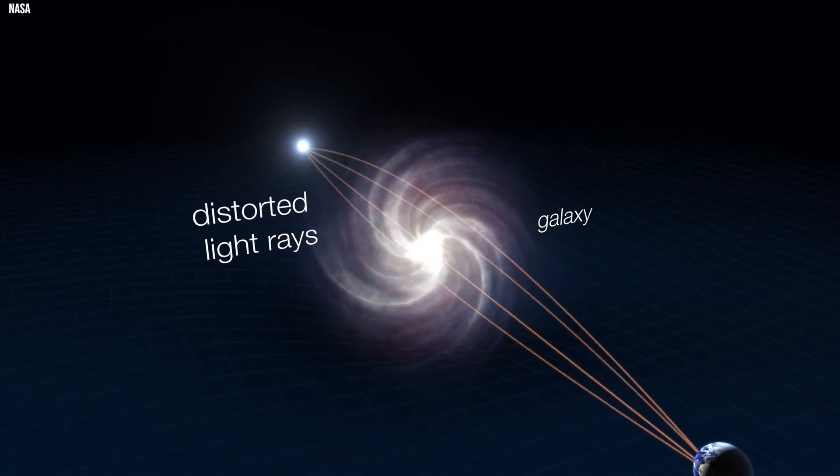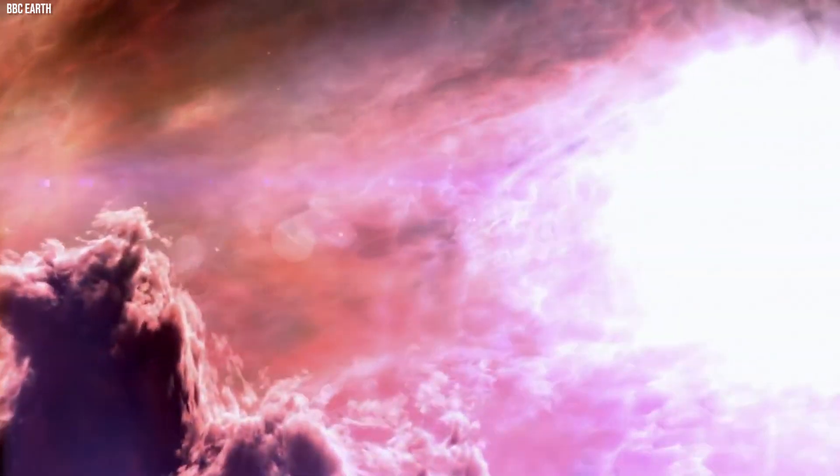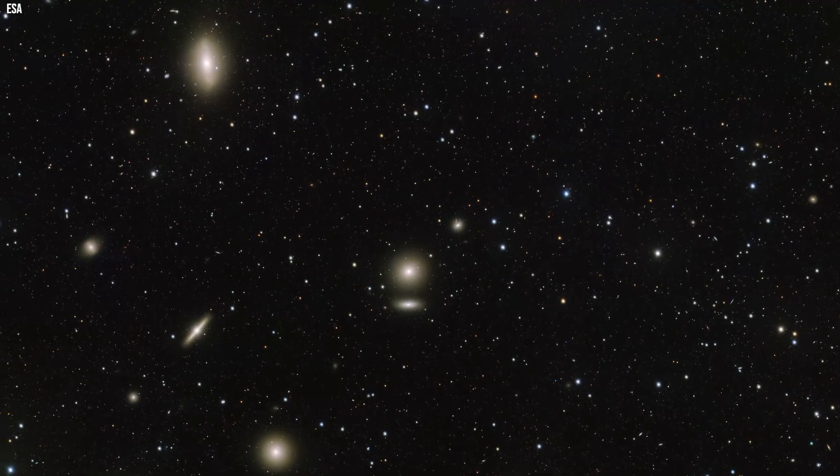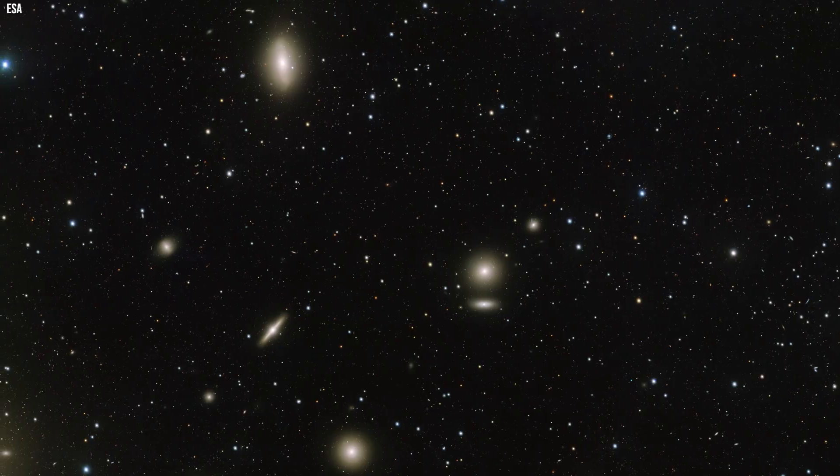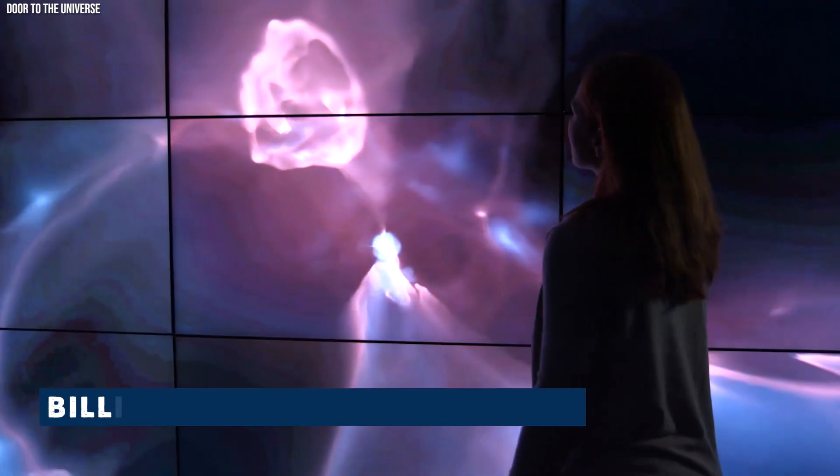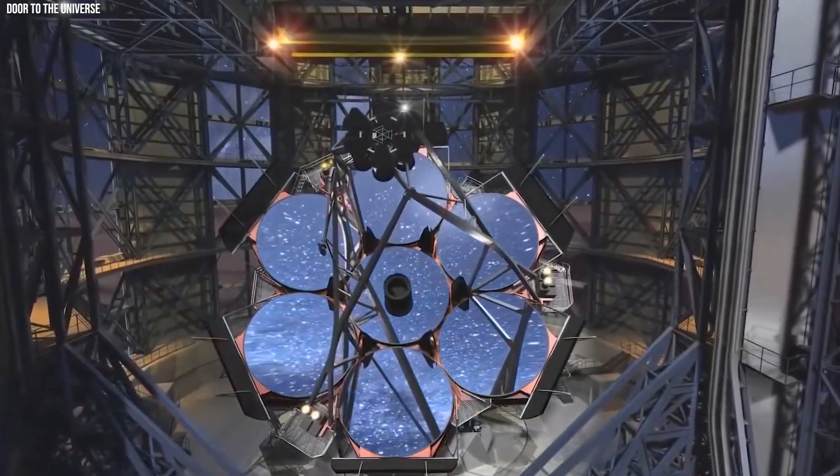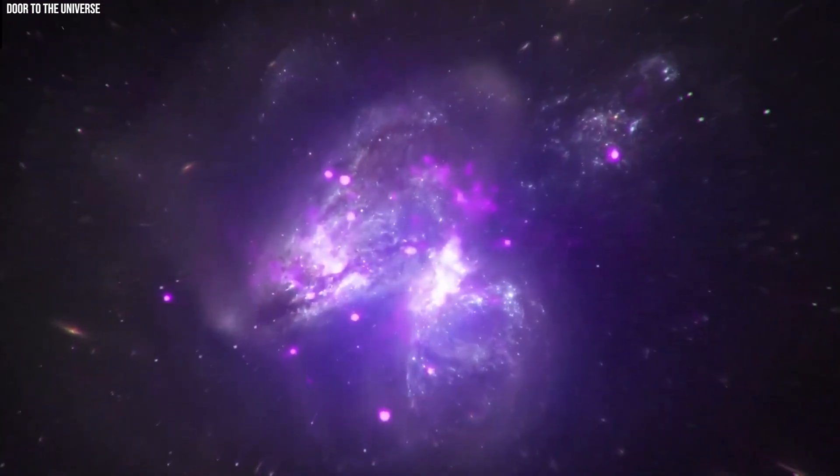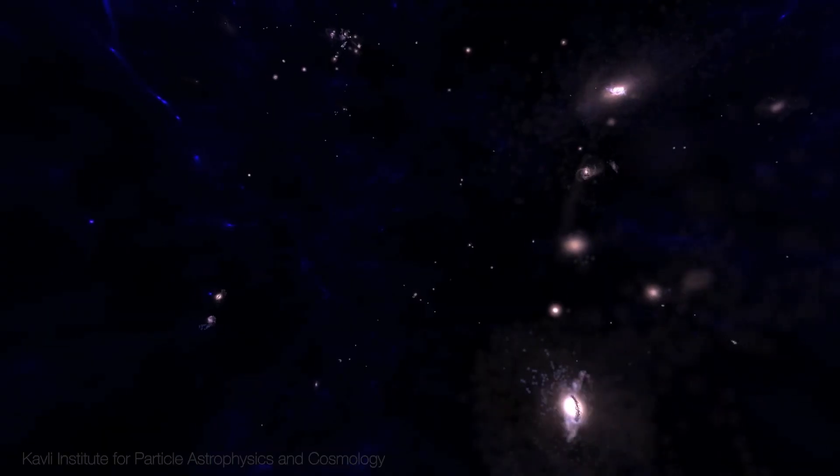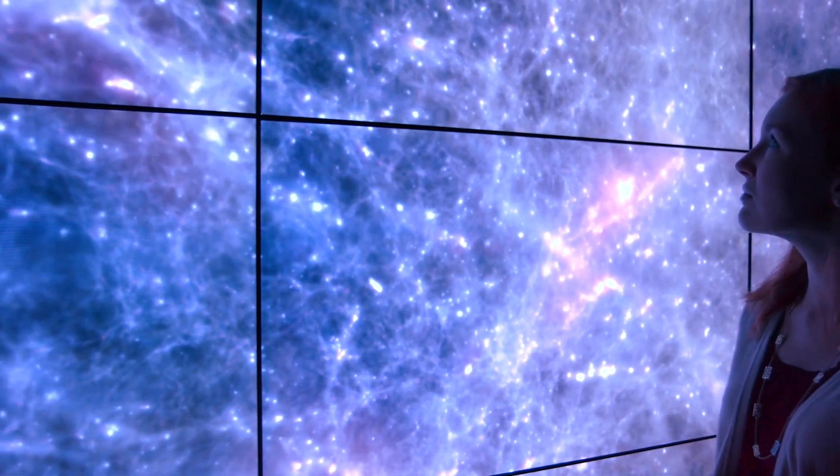Adding to the intrigue, scientists utilized gravitational lensing, a phenomenon predicted by Albert Einstein, to capture an image of Abel 2744Y1. In gravitational lensing, the gravity of a massive object, like a galaxy cluster, bends and magnifies light from a distant object. This groundbreaking technique allows scientists to gather insights about objects billions of light years away, unveiling a deeper understanding of the universe's secrets. The cosmos, it seems, continues to unfold its mysteries, inviting us to peer into its distant realms with ever-advancing technology and astronomical prowess.